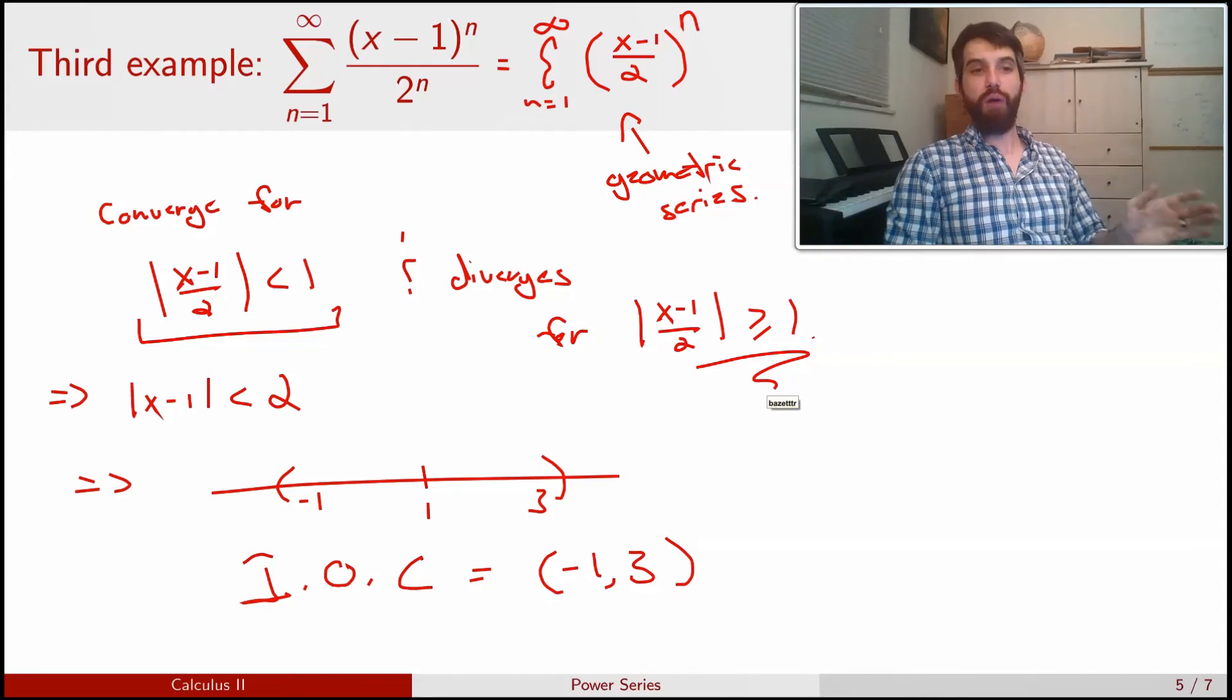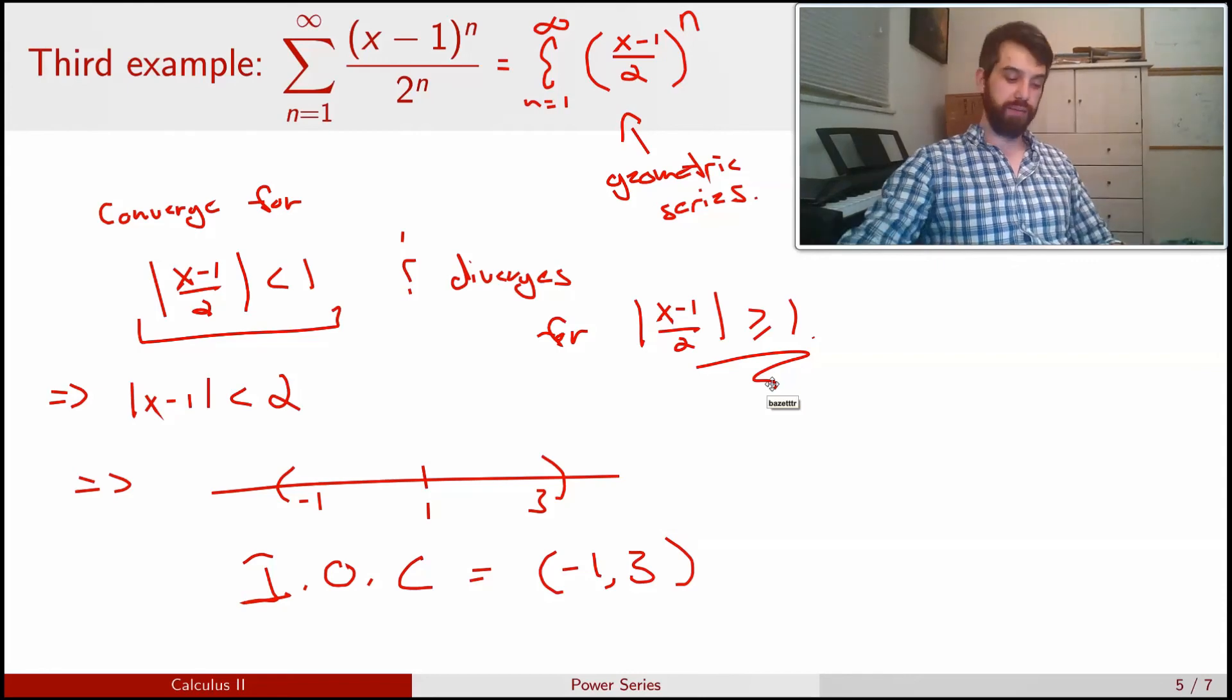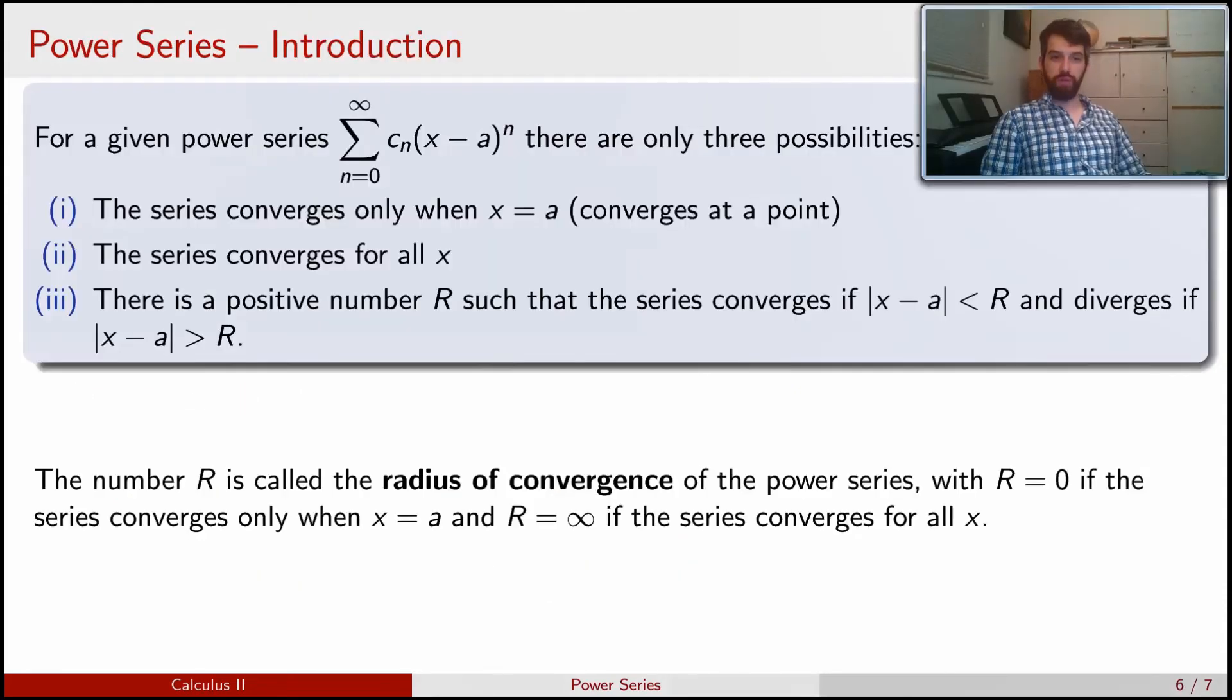So what have we got now? We've got an example where it converged everywhere. We've got an example where it converged for single value. And here we have an example where it converges for an interval minus 1 up to 3 with open brackets. It turns out that those three possibilities, everything, a single point, and an interval, are everything that's possible.